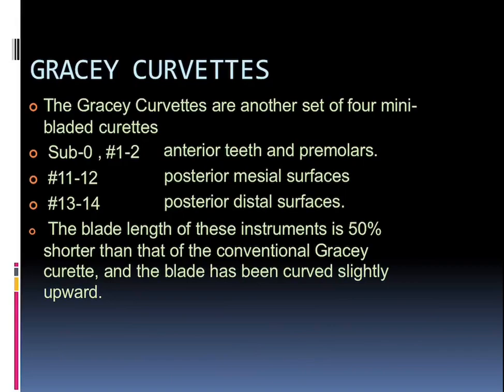Talking about the Gracey curettes — another set of four mini-bladed curettes (remember: curette, not curate): sub-zero and 1/2 are for anterior teeth and premolars, 11/12 are for posterior mesial surfaces, and 13/14 are for posterior distal surfaces. The blade length of these instruments is 50 percent shorter than that of the conventional Gracey curette, and the blade has been curved slightly upward in such curettes.